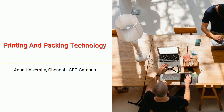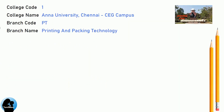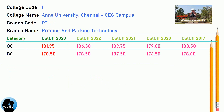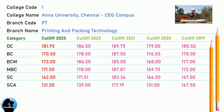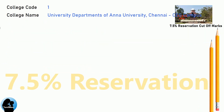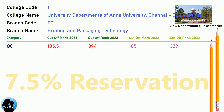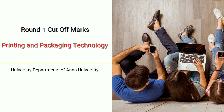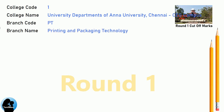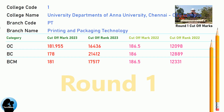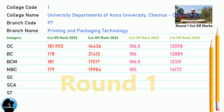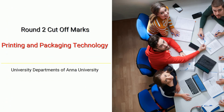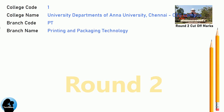DNA Cut-Off for Anna University Chennai CEG Campus in Printing and Packaging Technology. DNA 7.5 Reservation Cut-Off for Anna University Chennai CEG Campus in Printing and Packaging Technology. DNA Round 1 Cut-Off for Anna University Chennai CEG Campus in Printing and Packaging Technology. DNA Round 2 Cut-Off for Anna University Chennai CEG Campus in Printing and Packaging Technology.